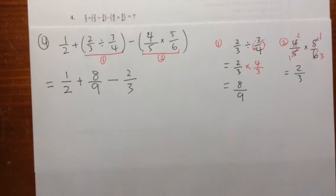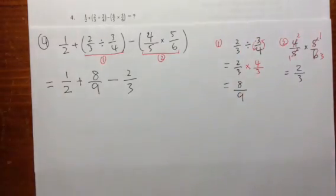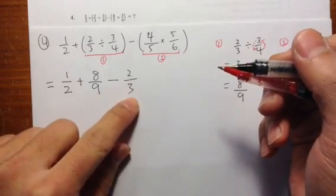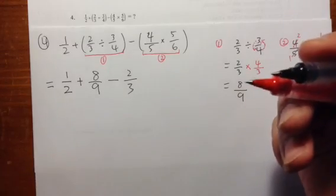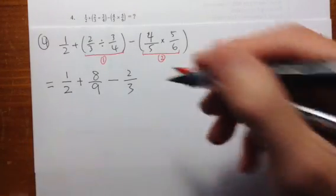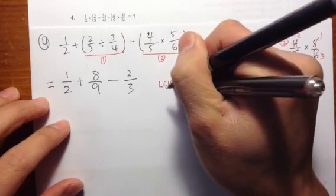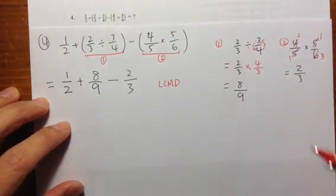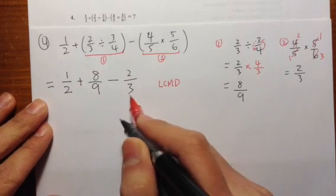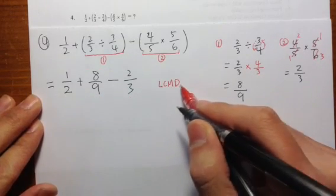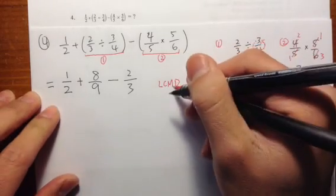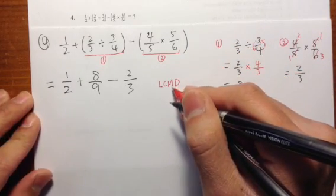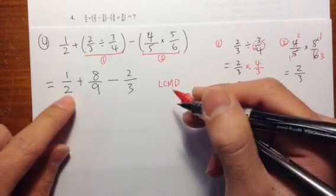Now we are going to look at something more complicated — we have to add and also subtract the fractions. Notice the denominators 2, 9, and 3. We are going to make them the same first — make the denominator the same. We need the lowest common multiple of the denominators. We are going to pay attention to 2, 9, and 3.